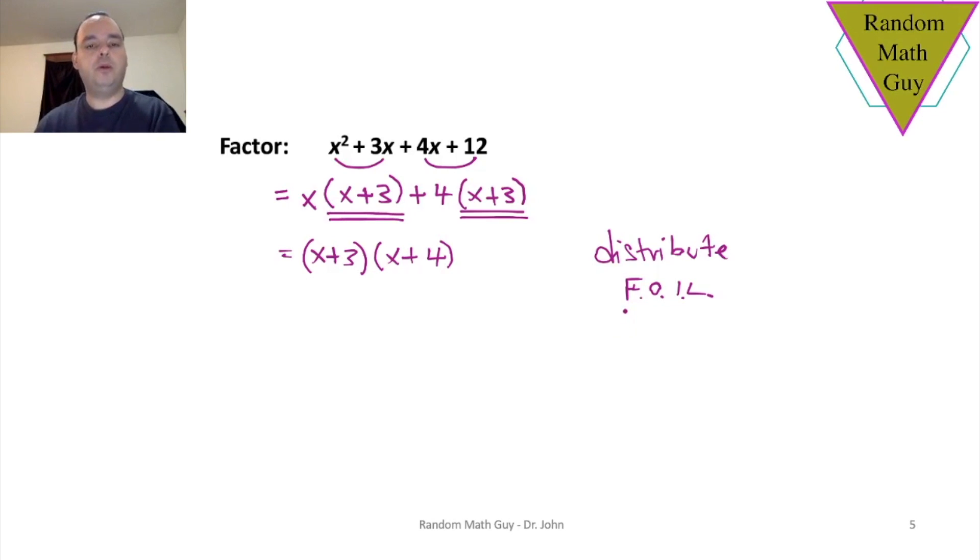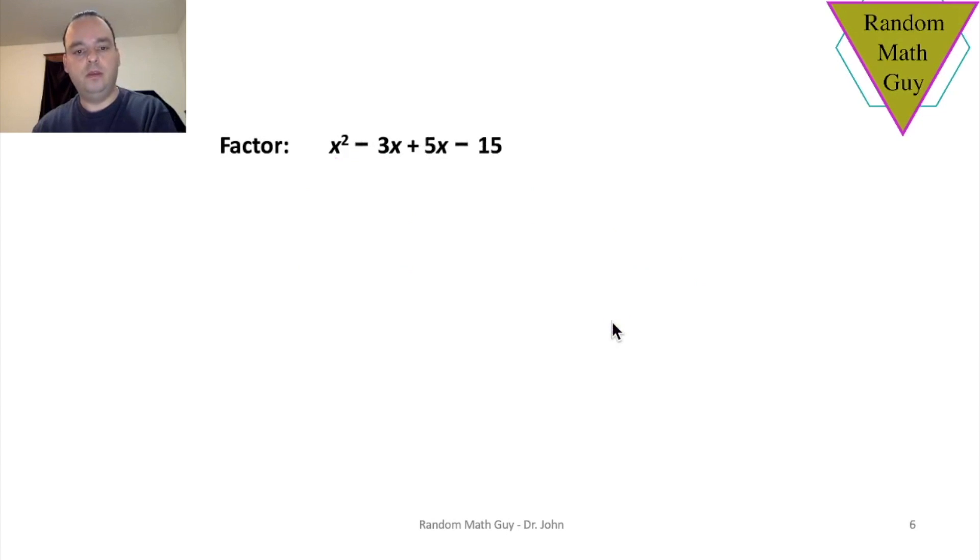Again, here we have four terms. None of the terms share an x, and the only number that's common is a 1. 1 doesn't really help you. So let's divide and conquer here by grouping. You can factor an x out of the first pair of terms, leaving you with x minus 3. And in the second pair of terms, you can take out a 5, also leaving you with x minus 3. Again, all colors aside here, I'm going to just underline the expression that appears twice, which is x plus 3. You can take out that x plus 3, and that leaves you with x plus 5. This is the factored form for this expression.